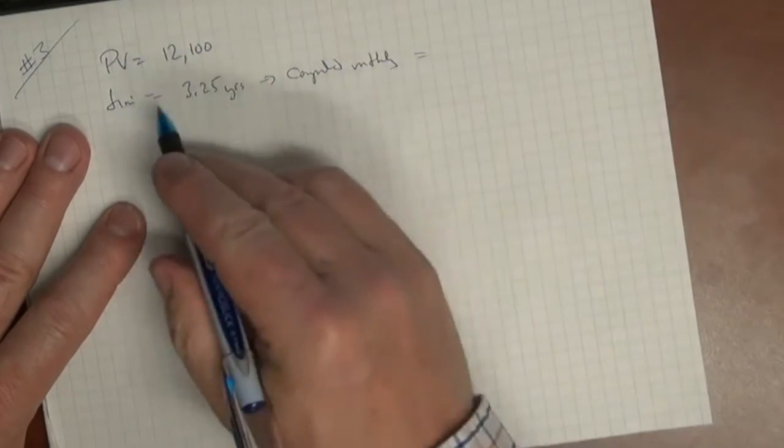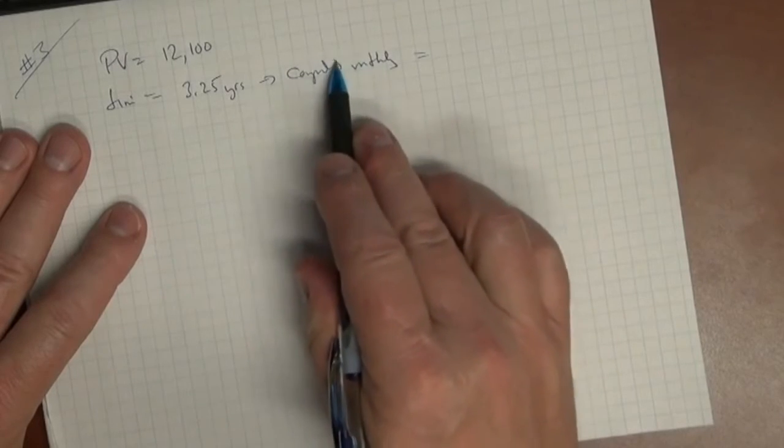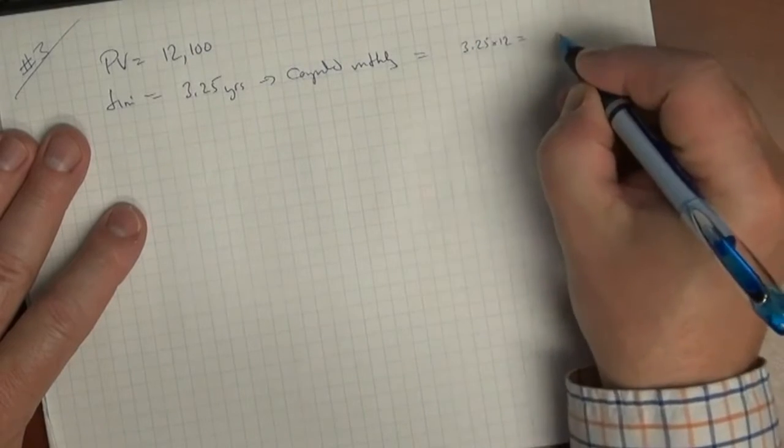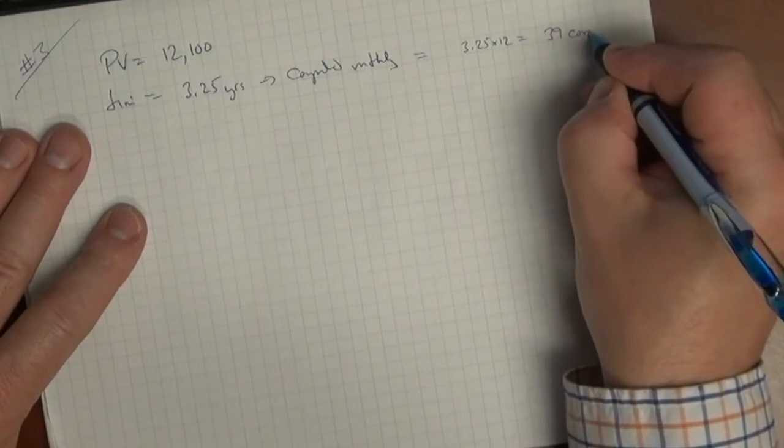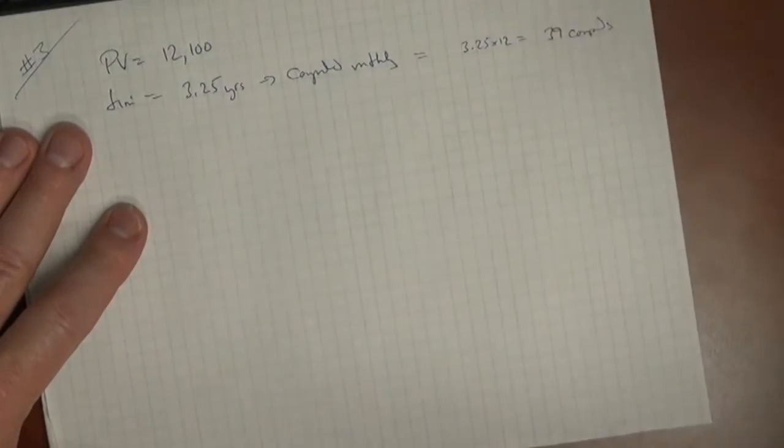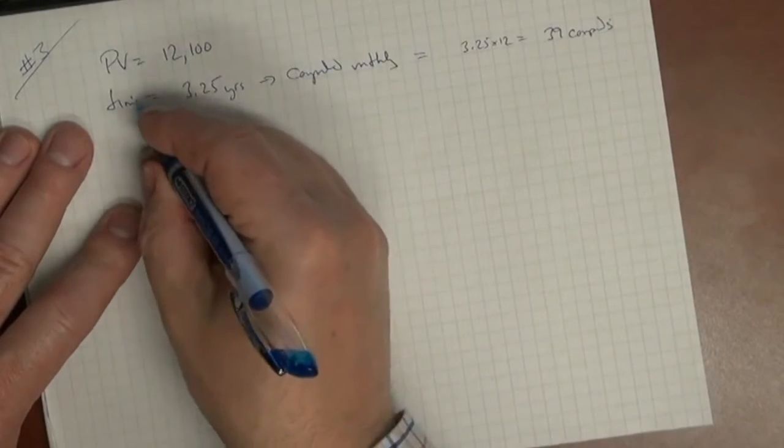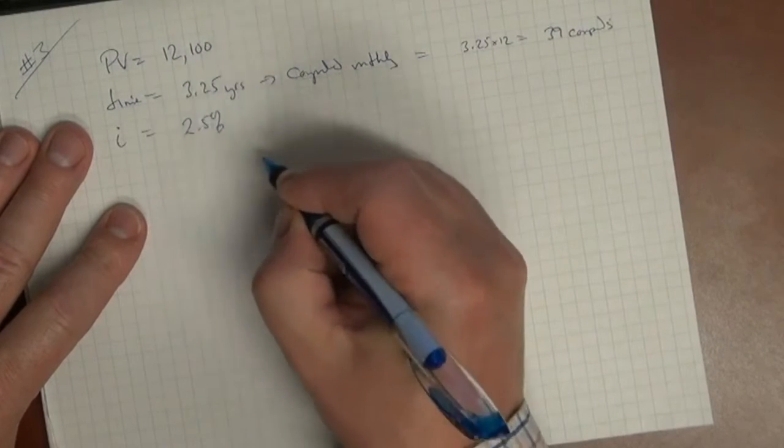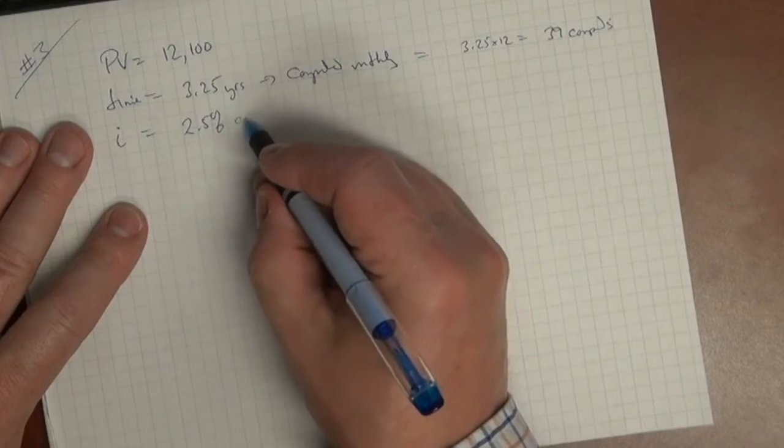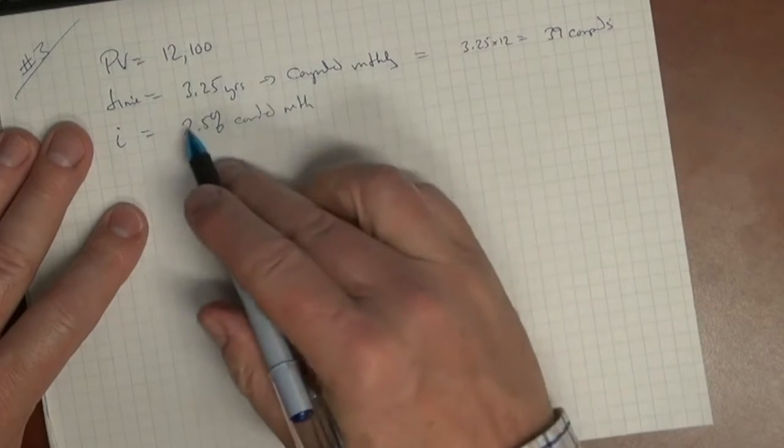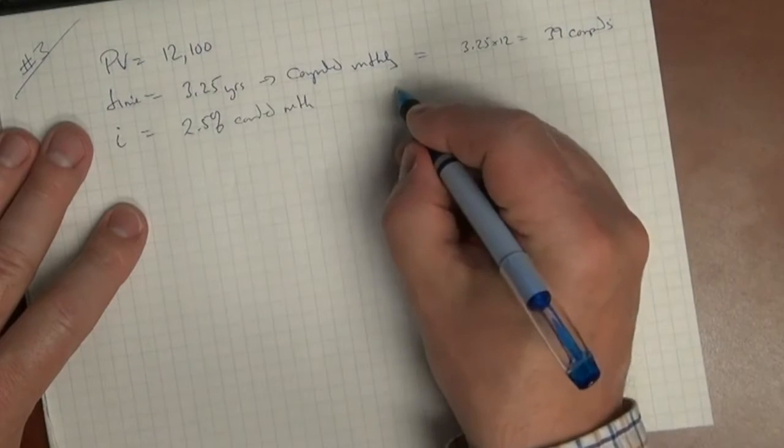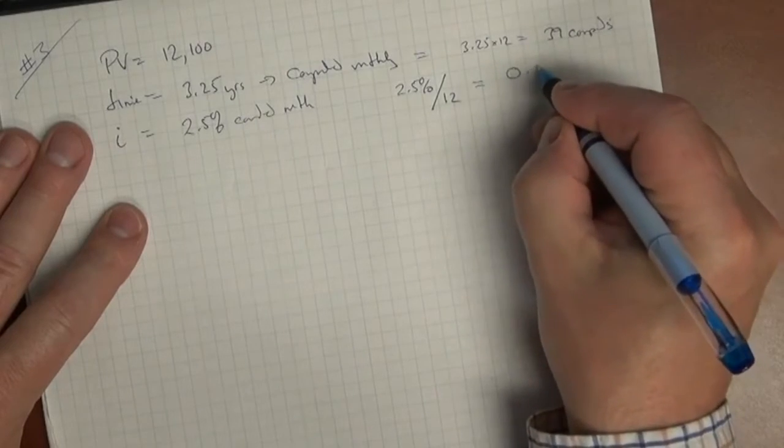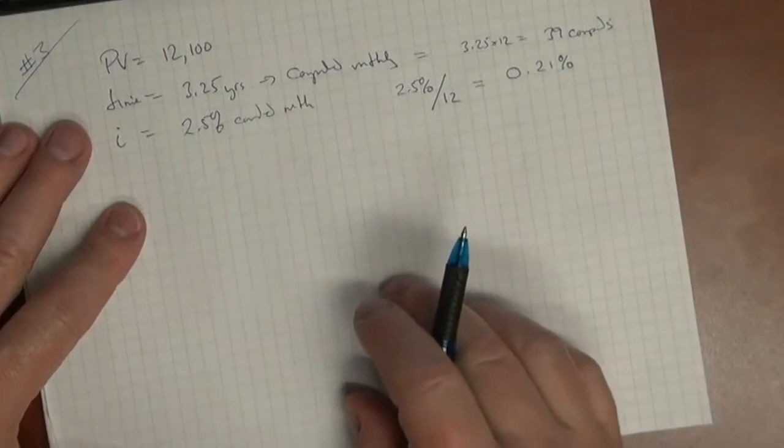And so that means that the number of compounds is 12, which is compounded monthly, times 3.25, and that comes to 39 compounds. In other words, it's multiplied up in terms of the calculation 39 times. So that's time. Let's take a look next at interest. It's 2.5% interest. So when we think about 2.5% compounded monthly, what we have to do is find out the periodic rate. So we take the 2.5%, we divide it by 12, and that comes out to 0.21% per month. So eventually, that's the per month rate.